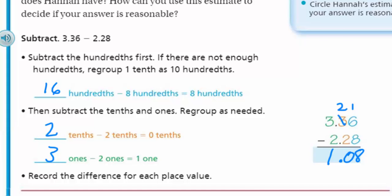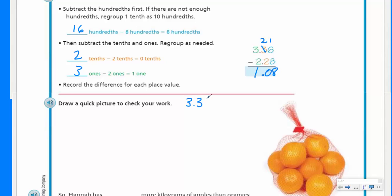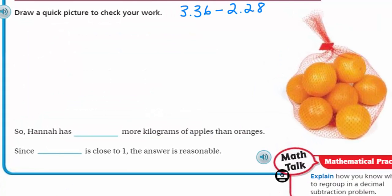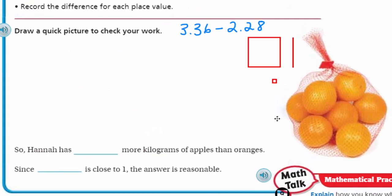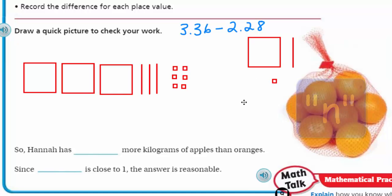Record the difference for each place value. Now draw a quick picture to check your work. Let me put the problem here, we have 3.36 hundredths minus 2.28 hundredths. First thing I need to do is model the 3.36 hundredths. Here's my three wholes, now I need three tenths, and then I need six ones. I'm going to take eight hundredths away from six hundredths. Well I can't take eight hundredths away from those six, so I do need to regroup.